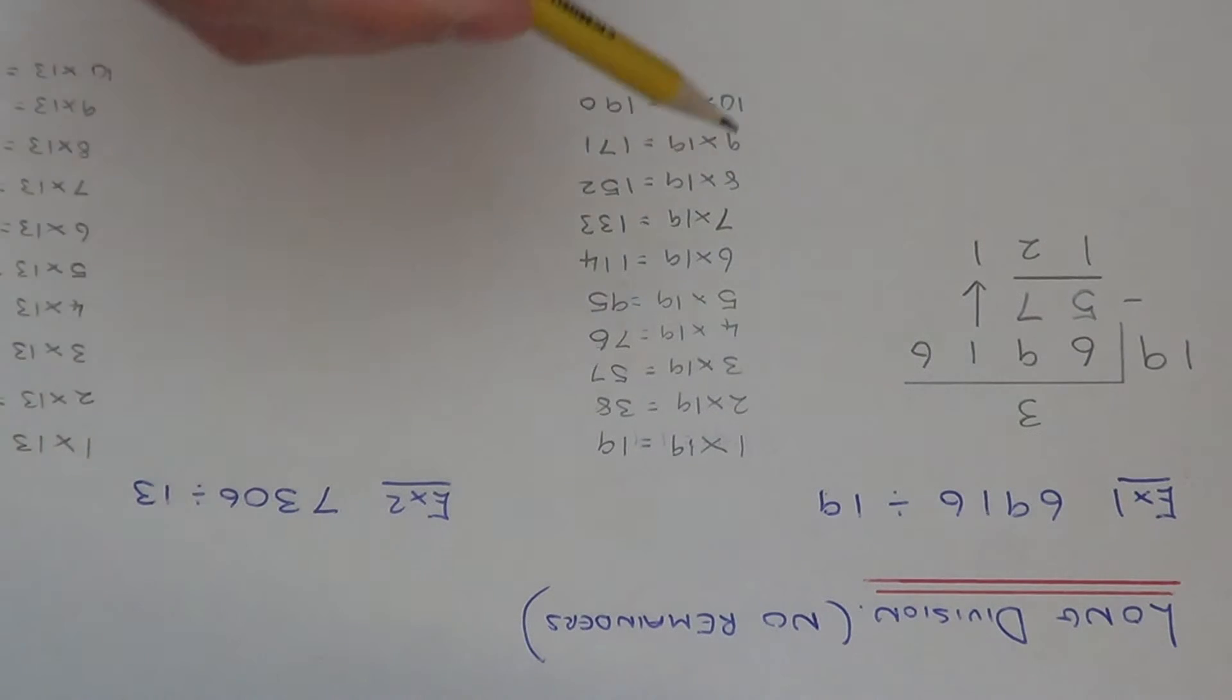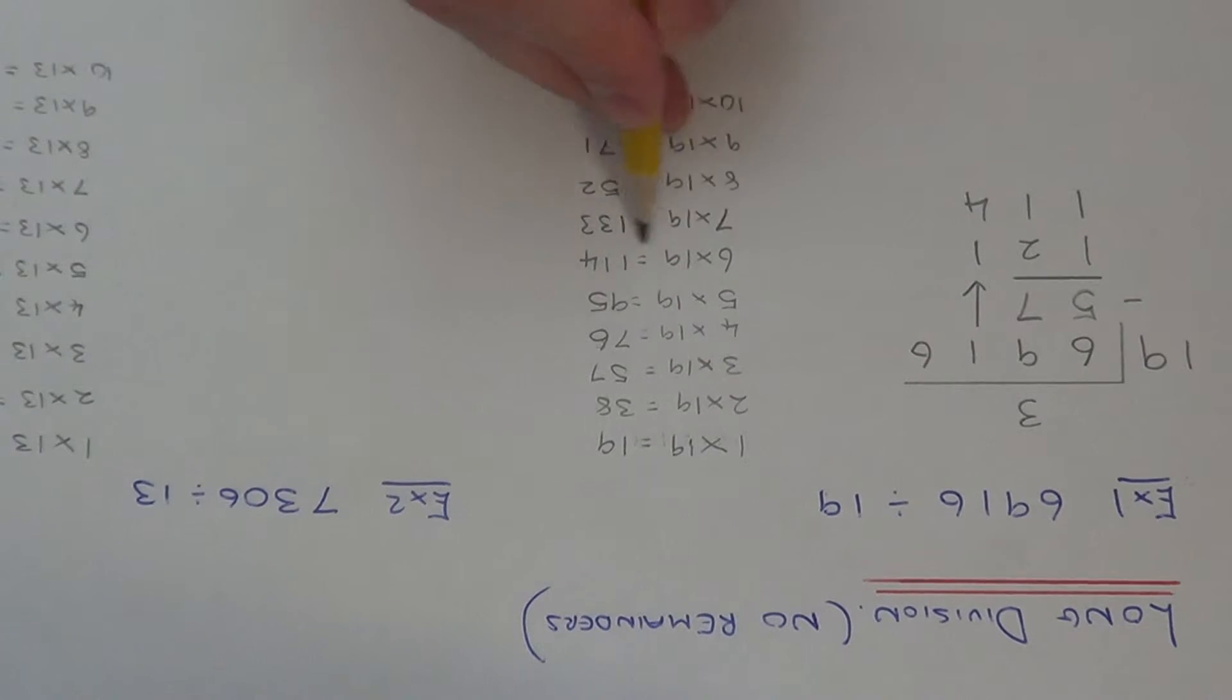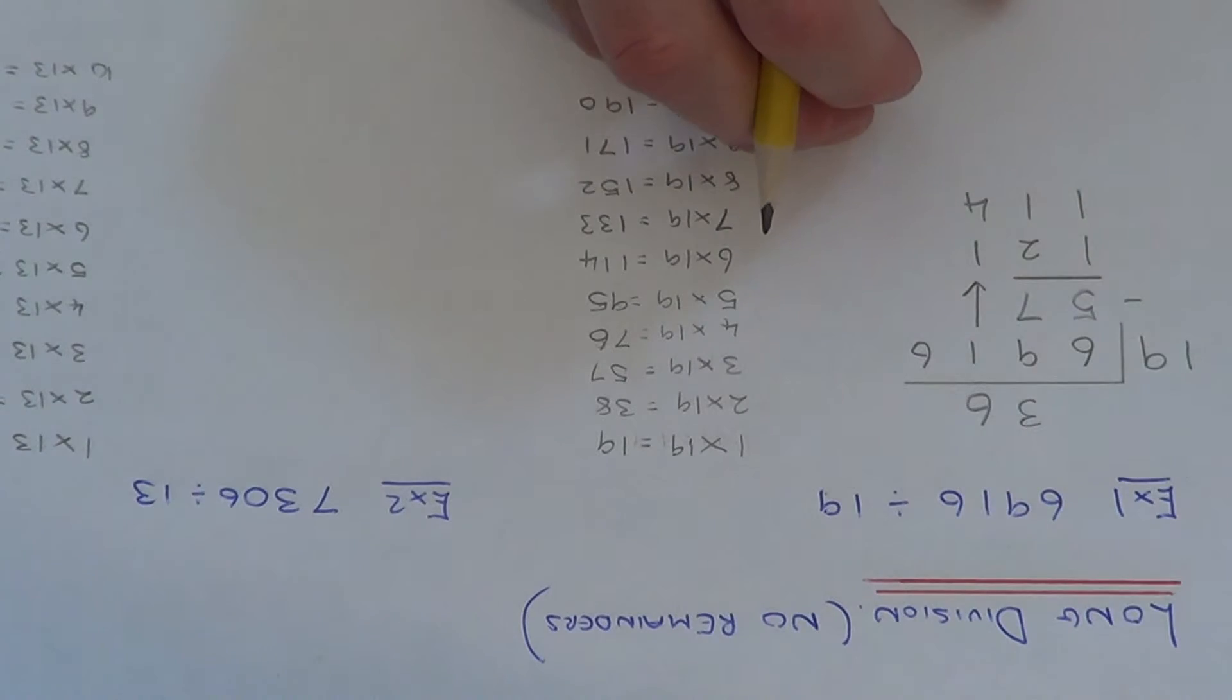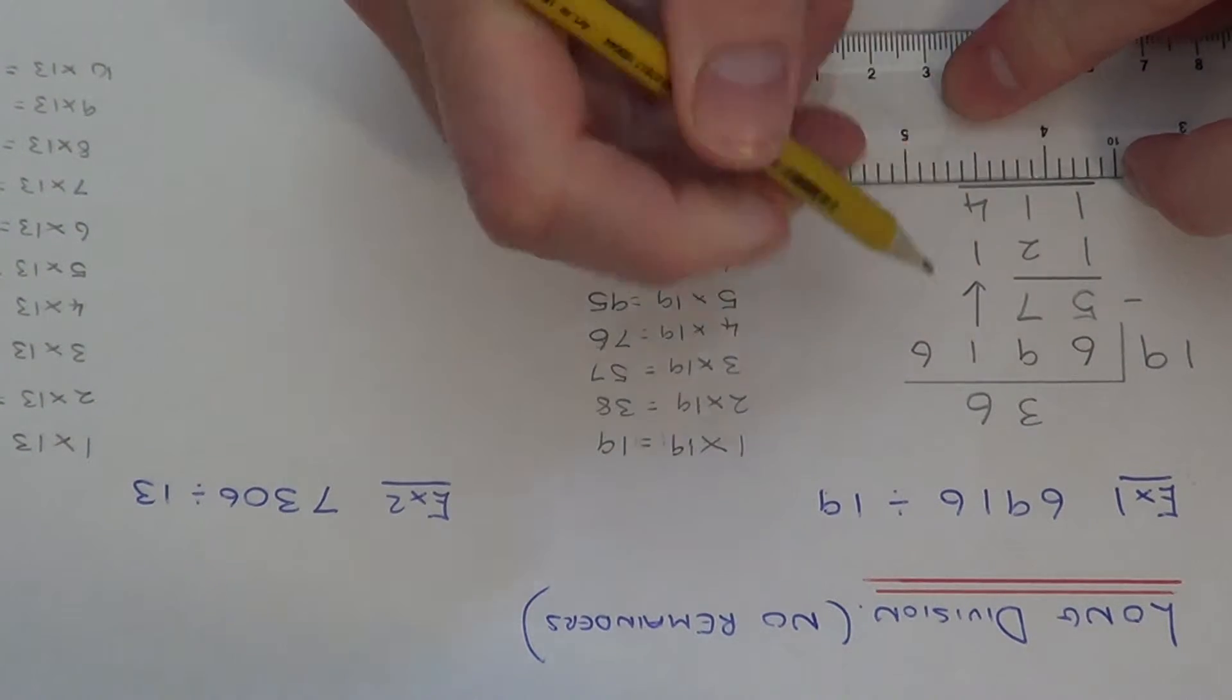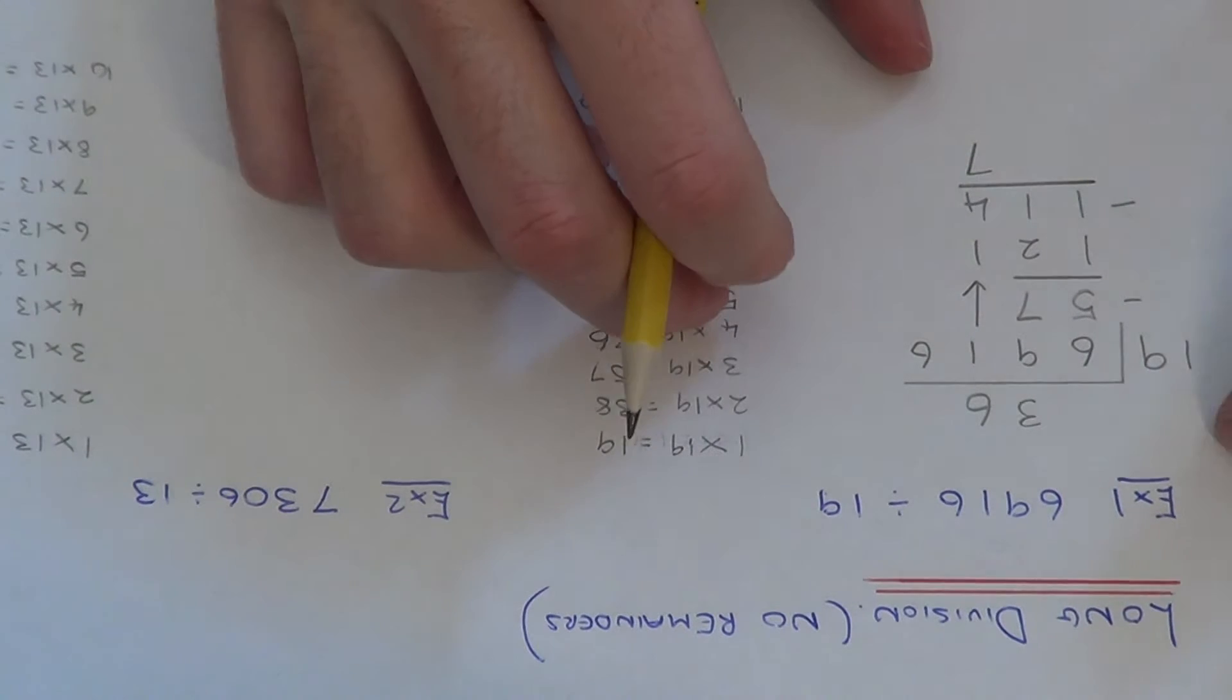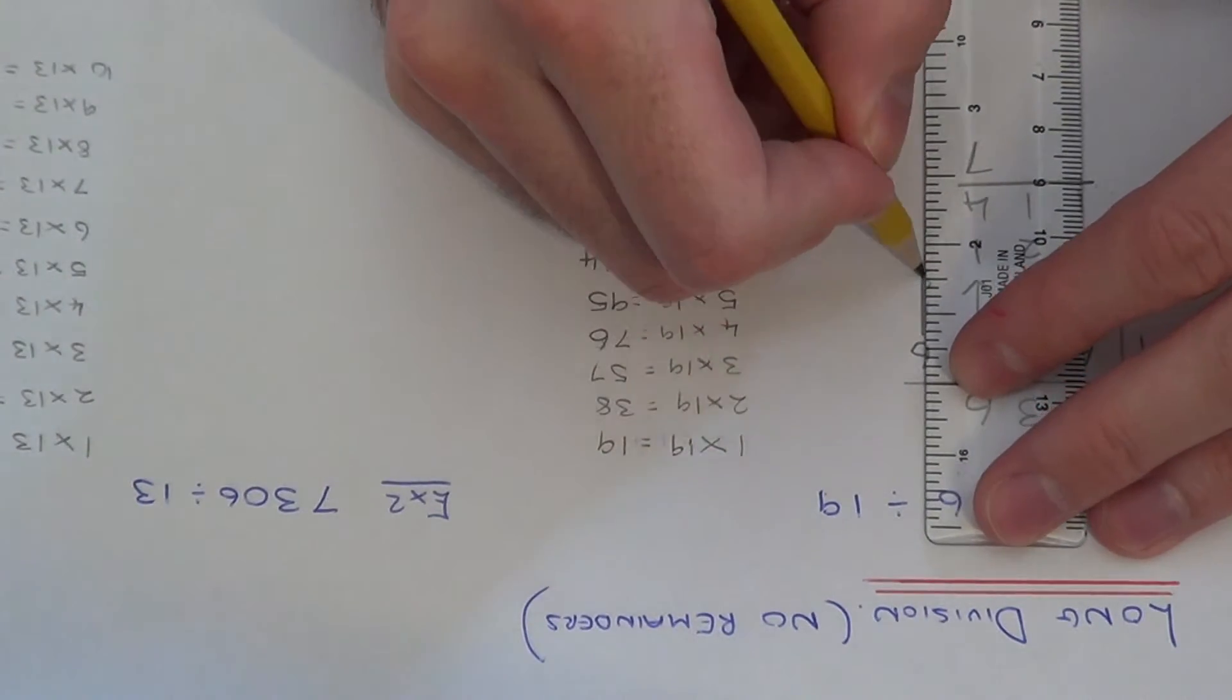So again if we copy that underneath, and it was 6 times 19, so we put the 6 at the top. So again we just need to take this away now. So 121 take away 114, that leaves us with 7. So again we bring the next number down from the top, which is a 6.